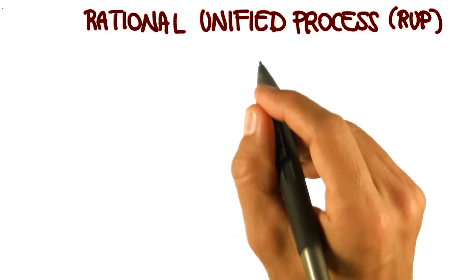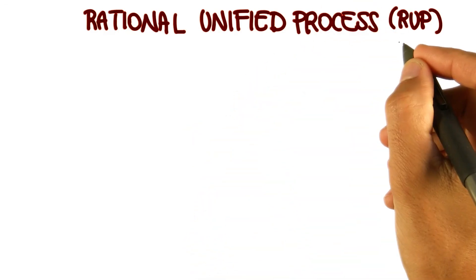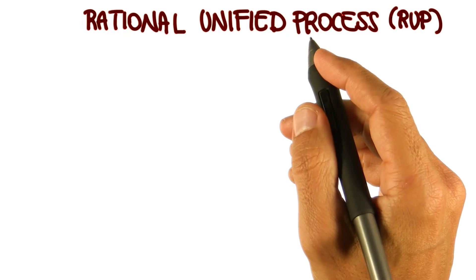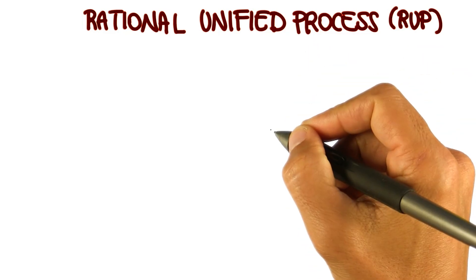There are two more software process models that I want to cover, so bear with me. The first one is the Rational Unified Software Process, or RUP, which is a very popular one based on UML.